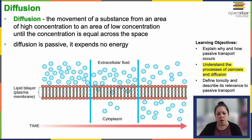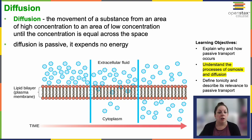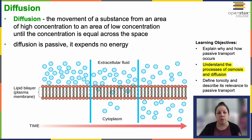Diffusion is the movement of a substance from an area of high concentration to an area of low concentration until the concentrations are equal — they come to equilibrium. Diffusion is passive; it does not require energy. The energy for it to happen is stored in that concentration gradient. It follows the concentration gradient of a substance, moving from high concentration towards low.